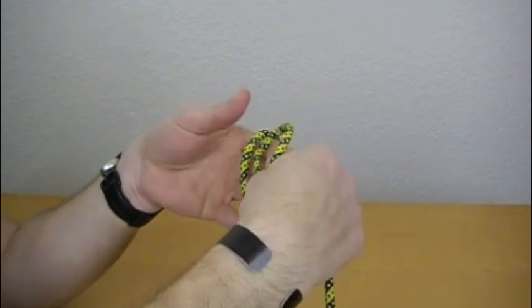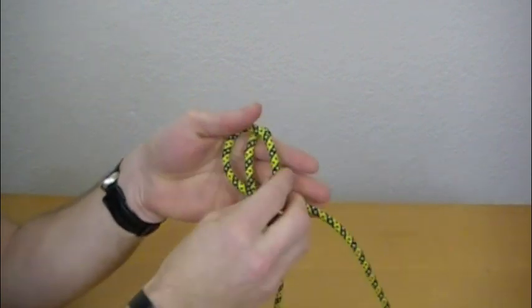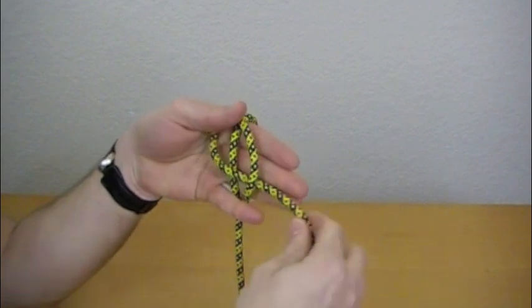You're just going to cross the loop behind itself and place it over the standing part.